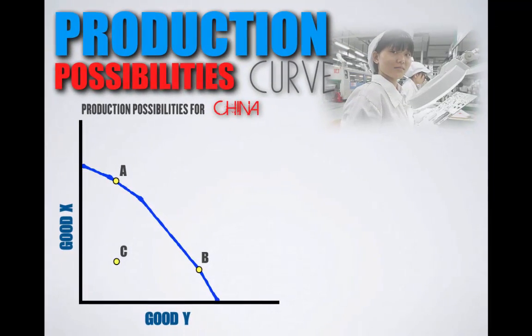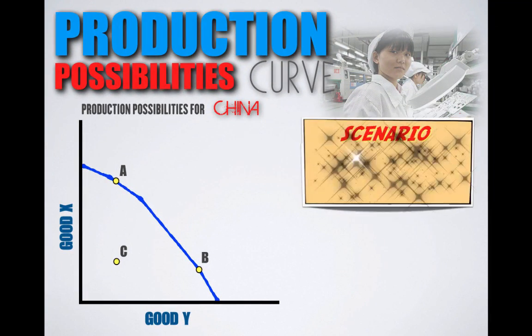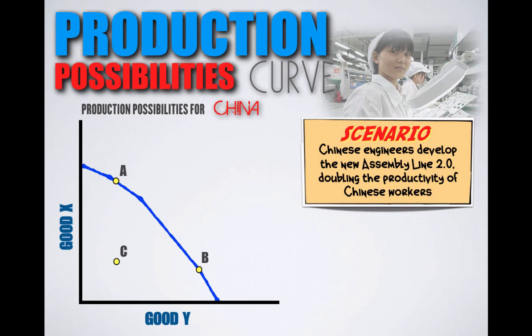For China: Chinese engineers develop a new assembly line 2.0, doubling the productivity of workers. Now that workers are twice as productive, they can make twice as many goods, meaning China's production possibilities curve will shift outward, reflecting an increase in their ability to produce.